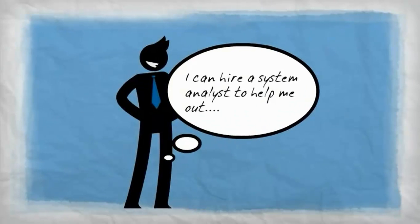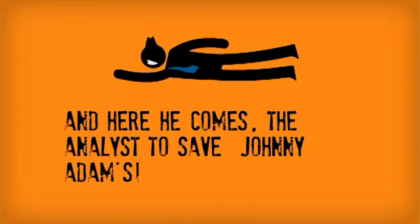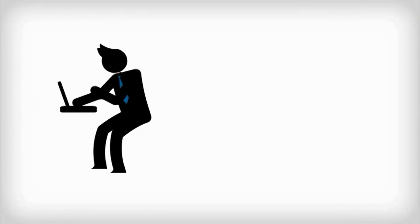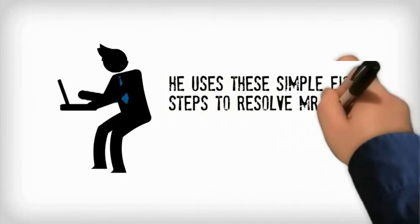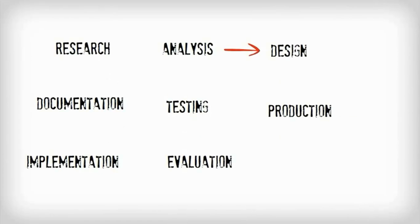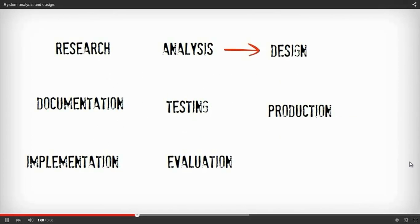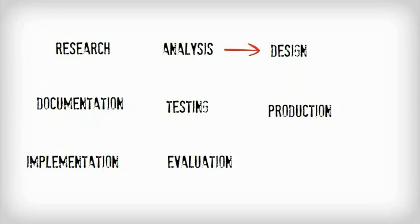Mr. John got an idea — let's hire a system analyst who can help resolve the problems. The analyst uses eight steps: Research, Analysis, Designing, Production, Testing, Documentation, Implementation, and finally Evaluation.